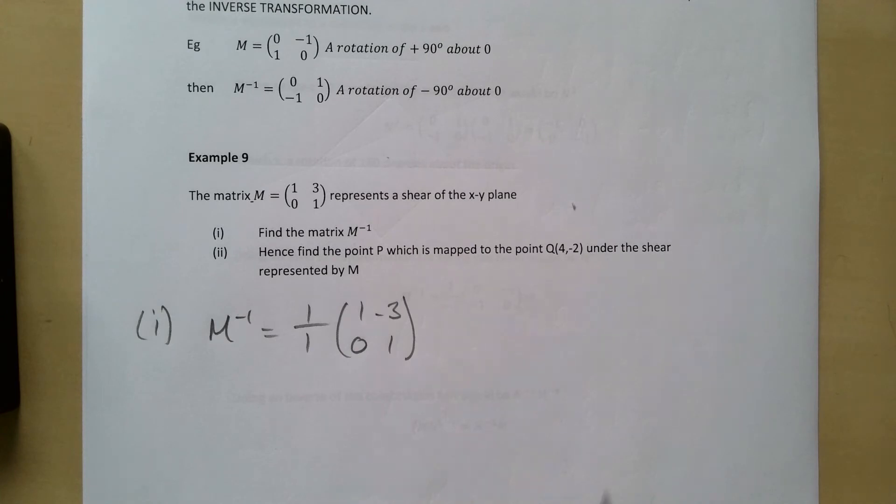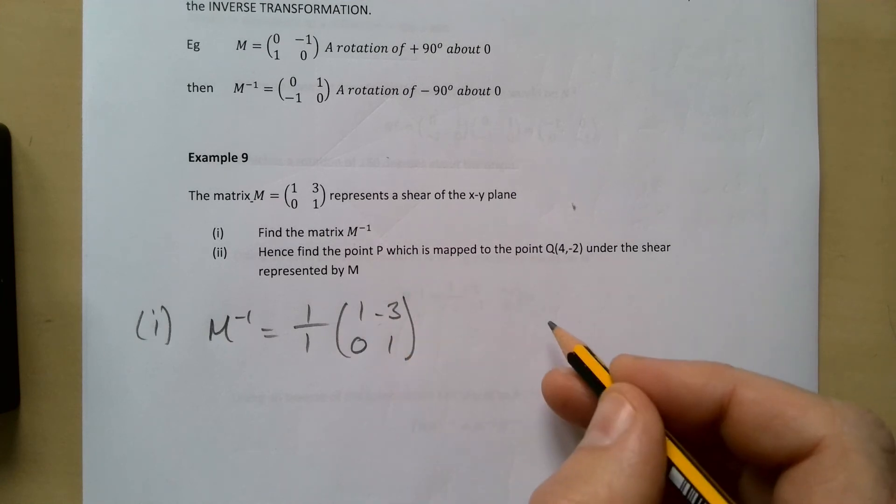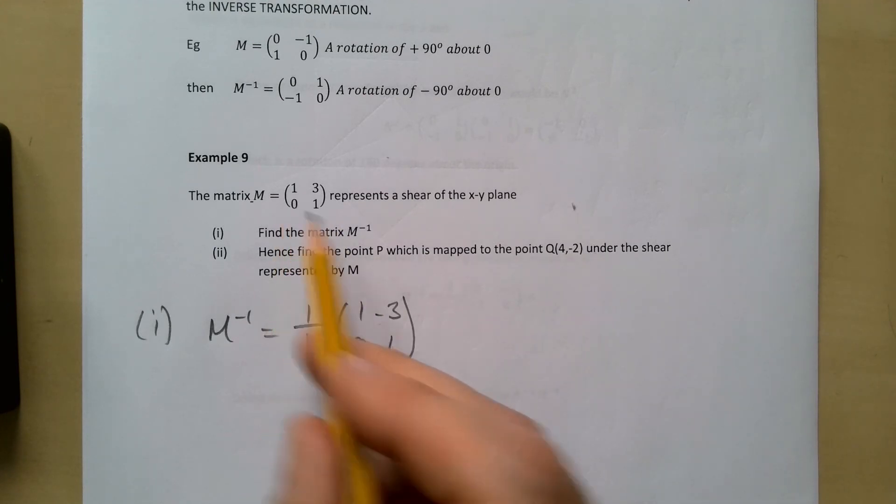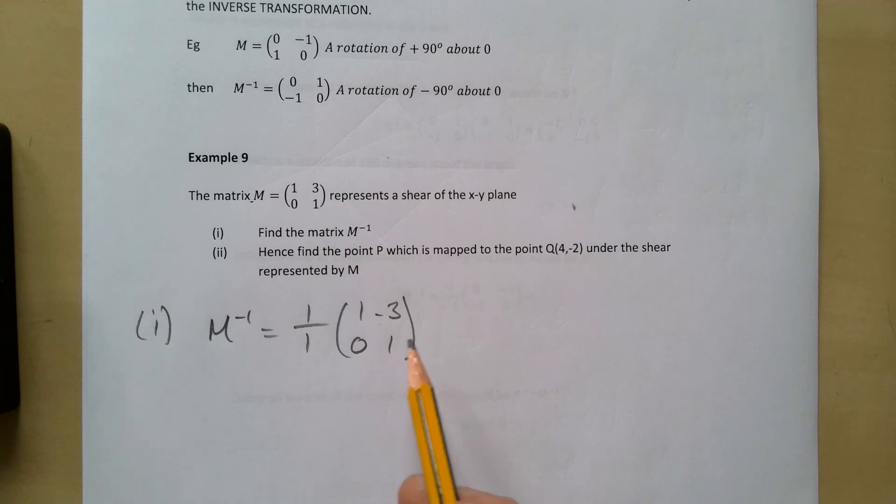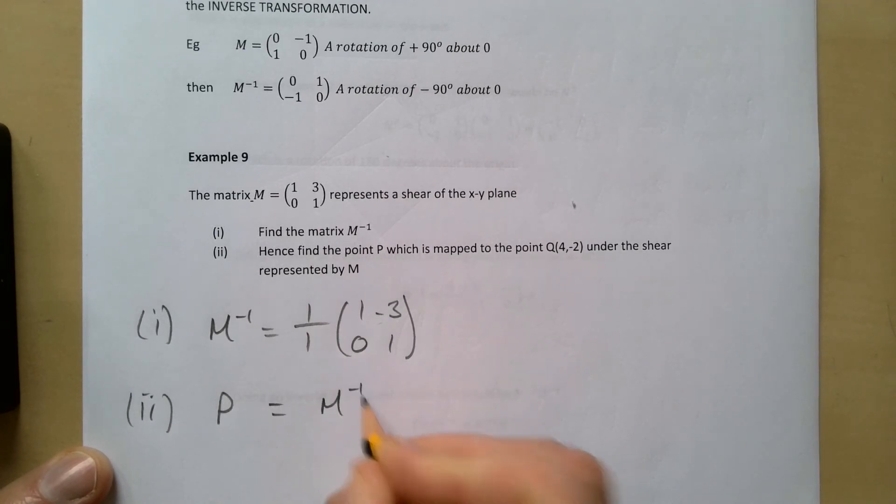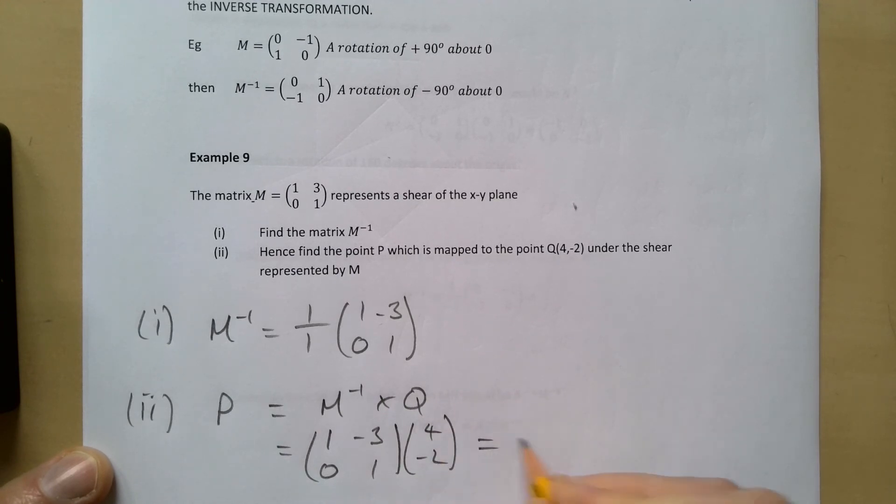If you take any point and sub it into this it gives you a new point. If you take your new point and send it through this matrix here, it then should give you the old point. Hence find the point P which is mapped to the point Q under the shear represented by M. So we're going to send the point (4,-2) through this inverse matrix to work it out. So that's going to be equal to M to the minus 1 times the point Q, so [1 -3; 0 1] times the point (4,-2). That gives me 4 plus 6 which is 10, and then minus 2.